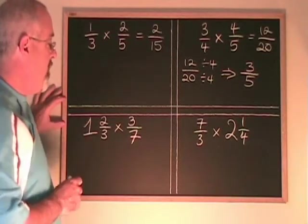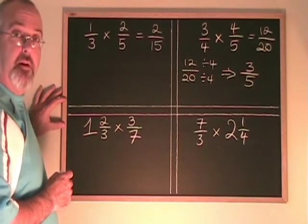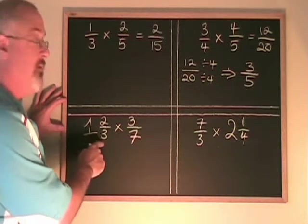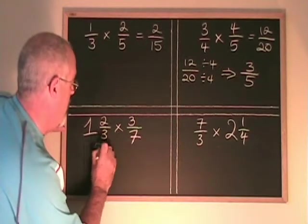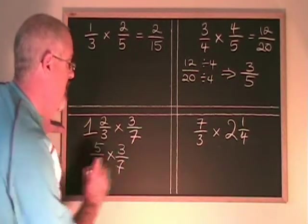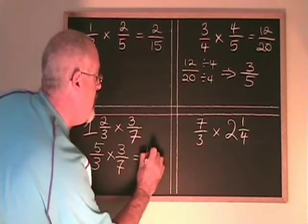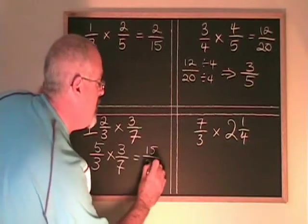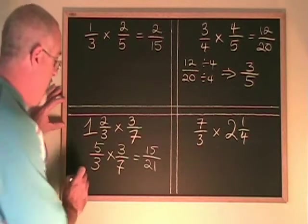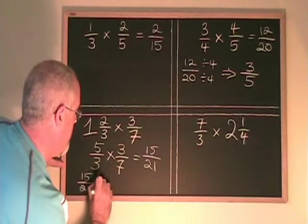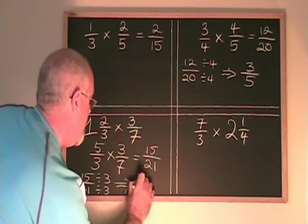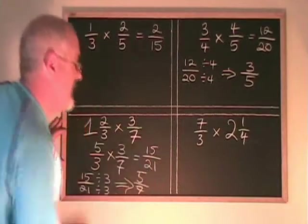In this case, we have 1 and 2 thirds times 3 sevenths. 1 and 2 thirds is a mixed number, so I want to convert it into an improper fraction before I do my multiplication. 1 times 3 is 3, plus 2 is 5 — so 1 and 2 thirds is equivalent to 5 thirds. When I do my multiplication, 5 times 3 is 15 and 3 times 7 is 21. Our answer is 15 over 21. But 15 and 21 have a common factor of 3, so if I divide both top and bottom by 3, I get 5 sevenths — and that is my final answer.